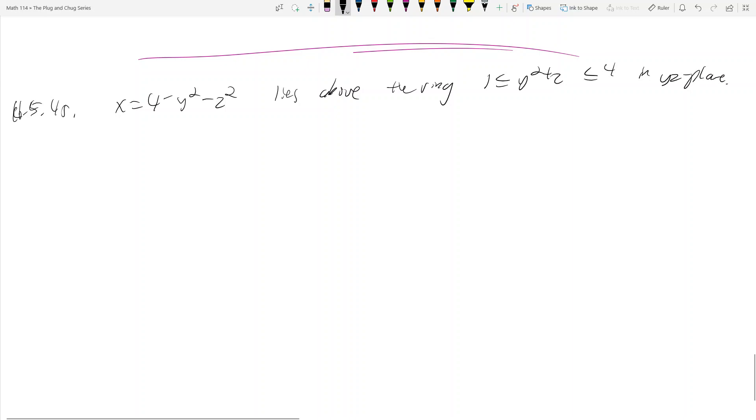To give you an idea what this guy looks like, because this isn't your typical paraboloid, if you draw your axes, this one is pointing in the negative direction because you've got minus y squared minus z squared, and it opens up in the x direction. So it's going to look like that, but it's opening in the negative x direction. That's our paraboloid, and then in the yz plane, we want to find the surface area that lies above this ring.